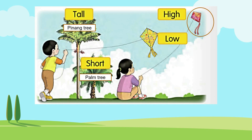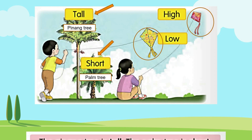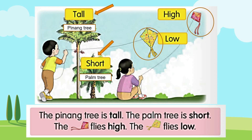Now look at this picture. The children are flying kites. The pink color kite is flying high and the yellow kite is flying low. We can also see a pinang tree and a palm tree. The pinang tree is tall and the palm tree is short.